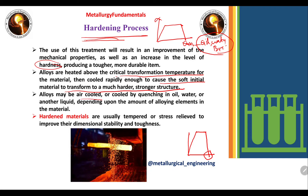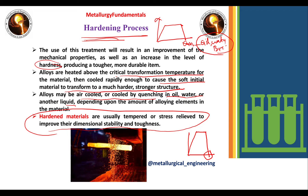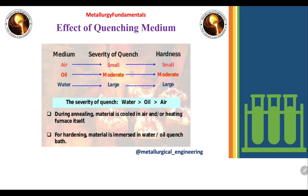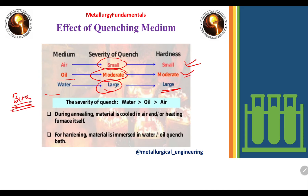Alloys may be air-cooled or quenched in oil, water, or brine, depending on the amount of alloying elements in the material. Hardened materials are usually tempered or stress-relieved to improve their dimensional stability. If you perform hardening, hardness increases but it also introduces higher residual stresses or brittleness, which is why tempering is needed. Looking at the effect of the quenching medium: air has a small severity of quench so hardness will be small; oil has moderate severity so hardness will be moderate; water has large severity giving the highest hardness among common media; and brine solution has the highest severity of quench, providing even more hardness than water quenching.